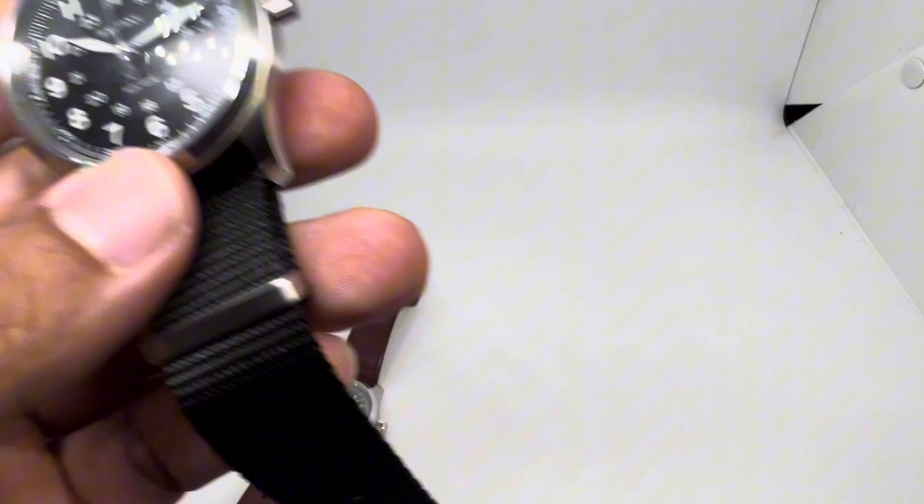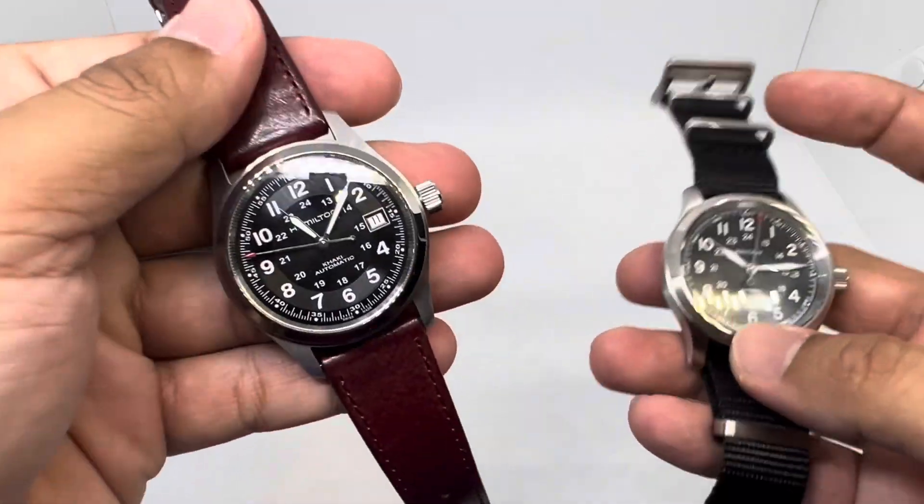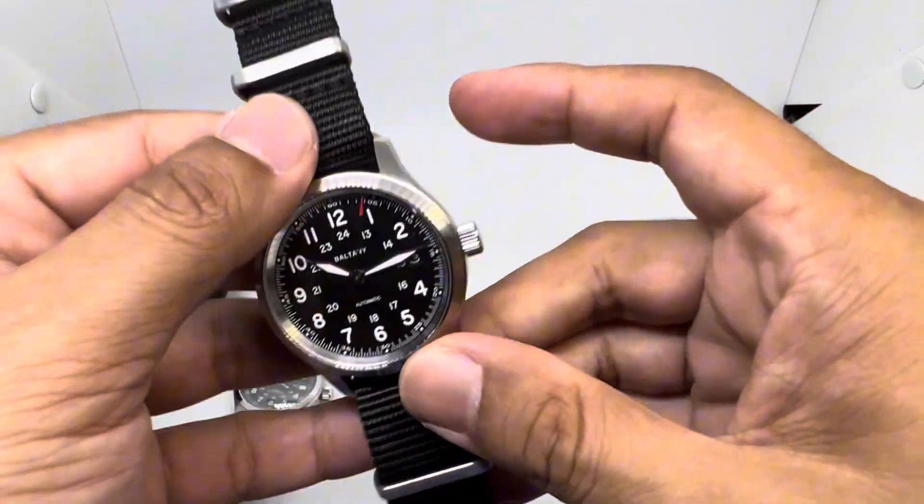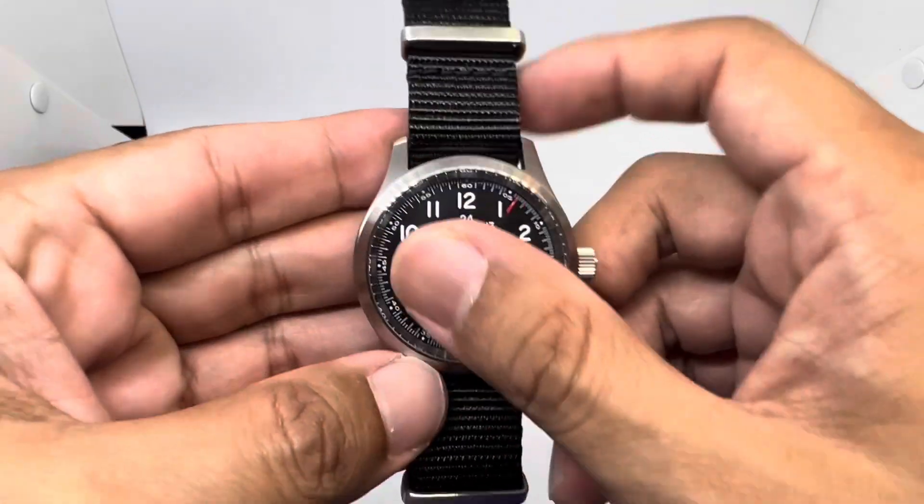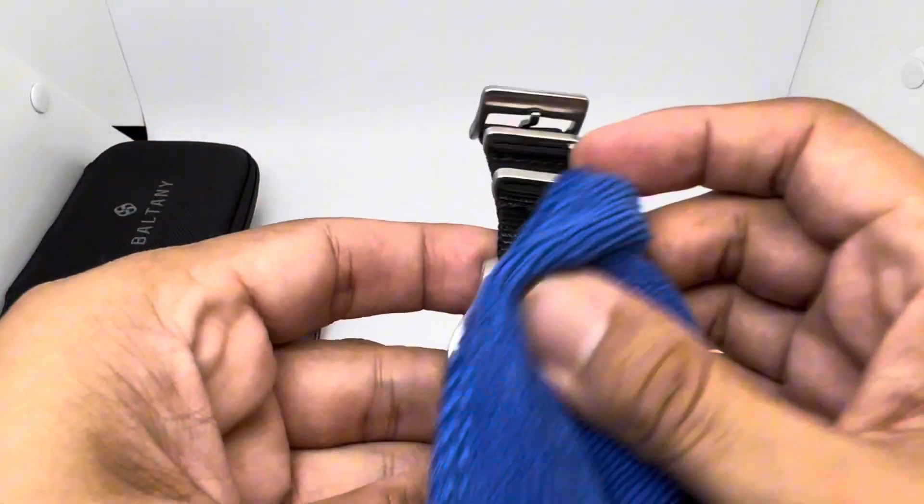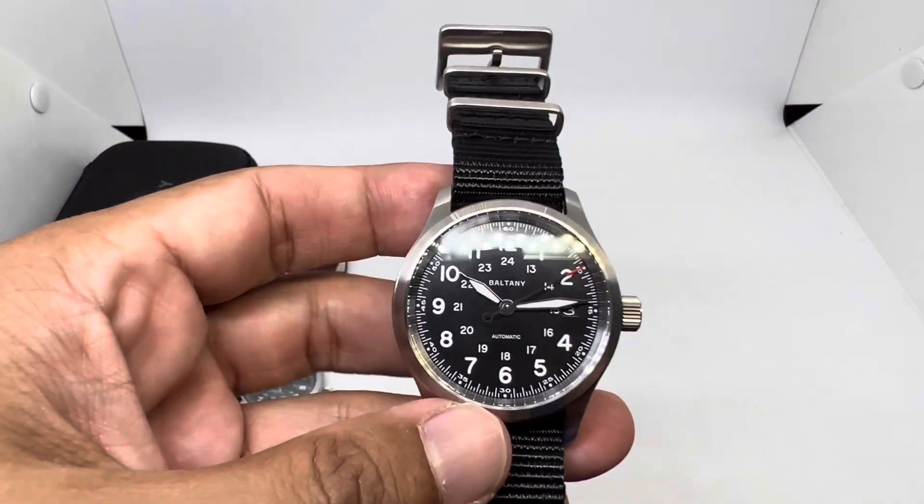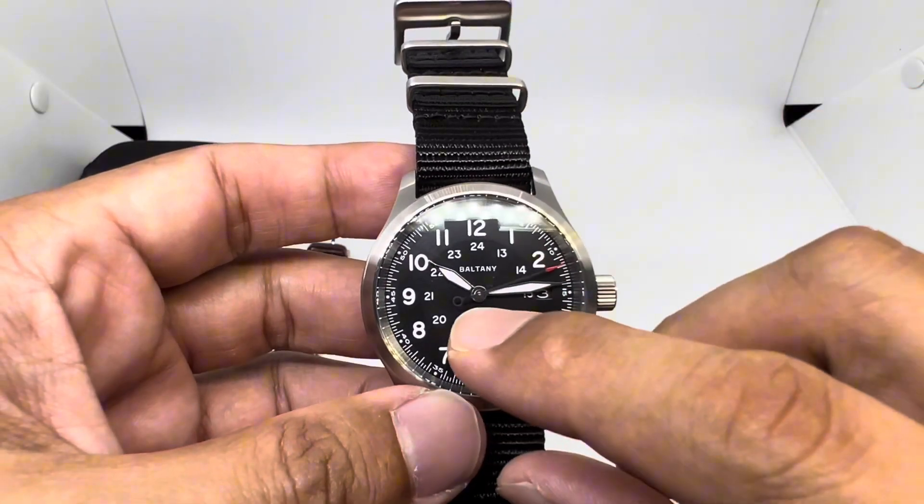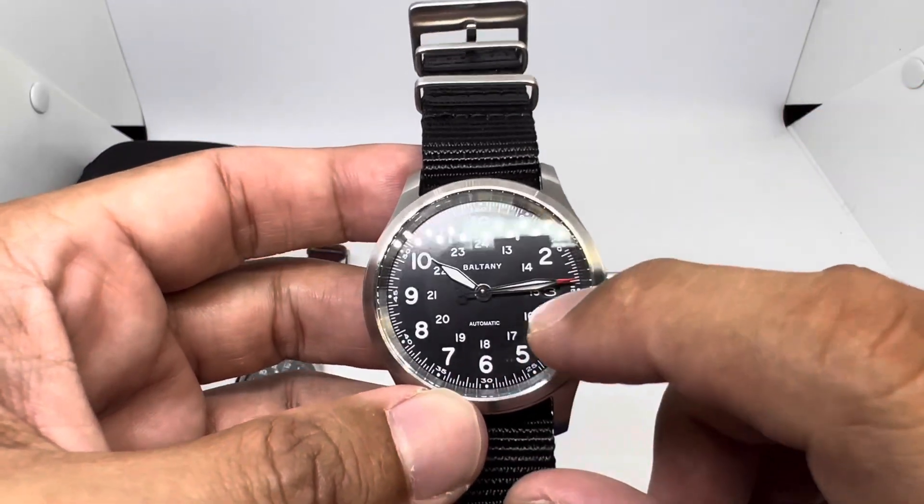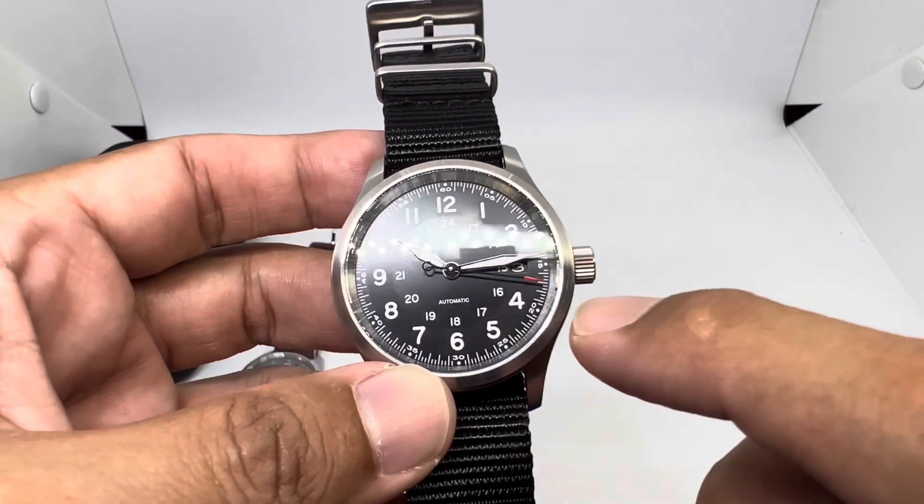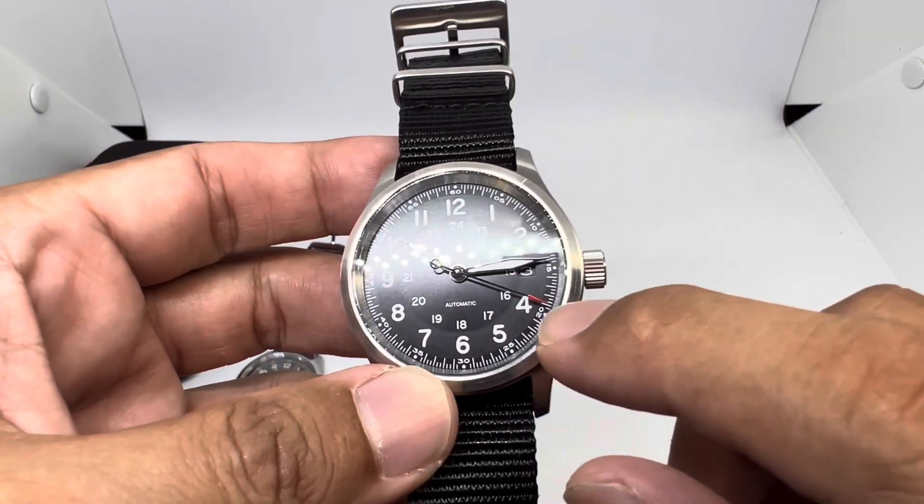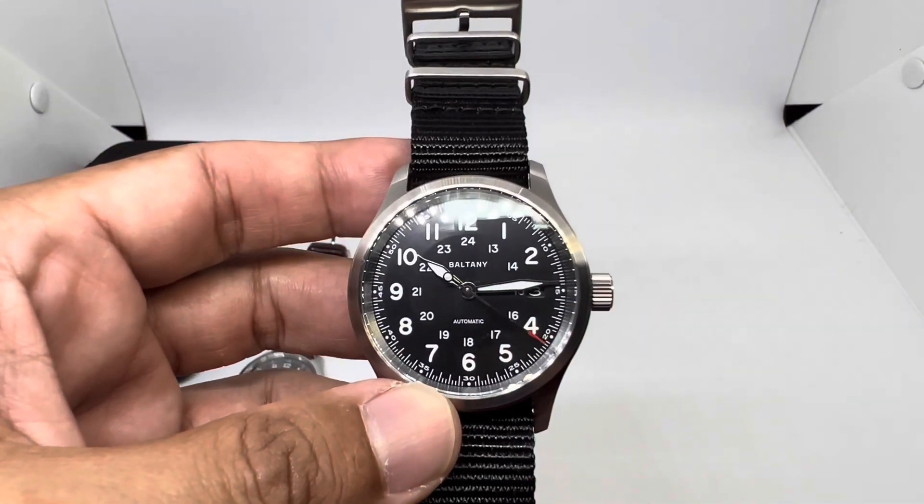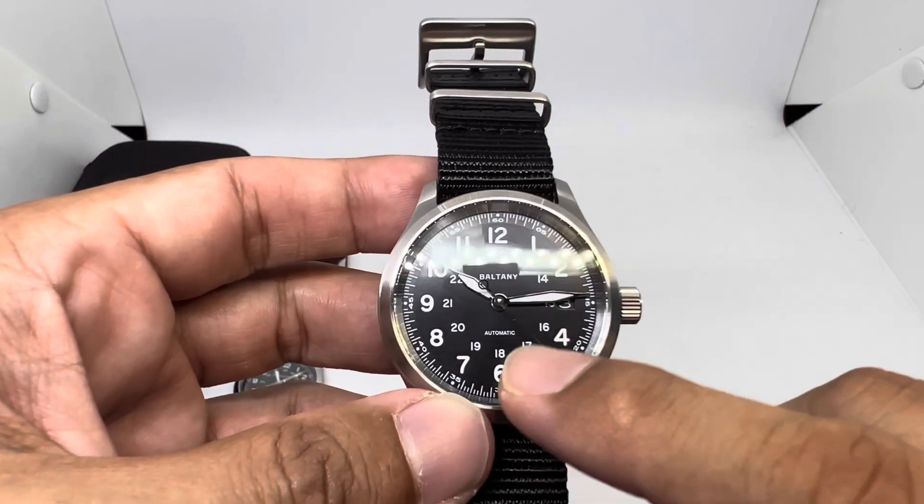Shame on you Hamilton, shame on you. I completely forgot to talk about the hands. The hands - although it mimics the Hamilton - we have this sword-looking thing on the hour hands and minute hands. But check out the second hand: the tip of the second hand is similar to the Hamilton, but the counterbalance has this circle there.